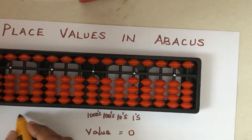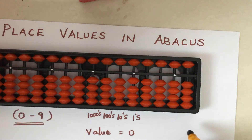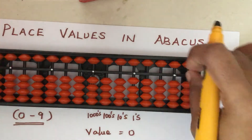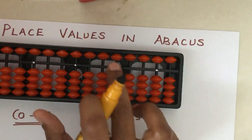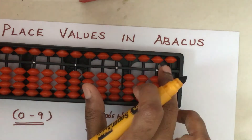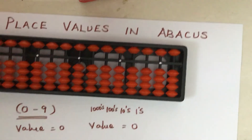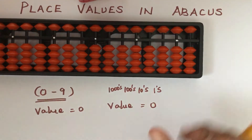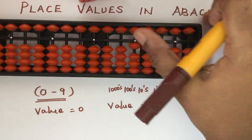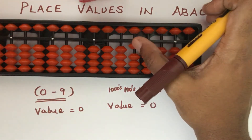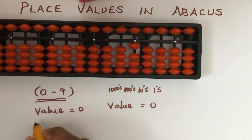Let us read from zero to nine in abacus. When there are no beads present on the beam, the value is equal to zero. Now I am pushing one bead to the beam — one bead touching the beam means the value is one.